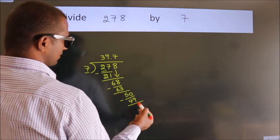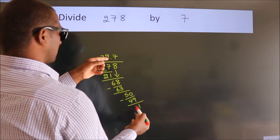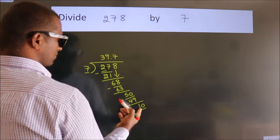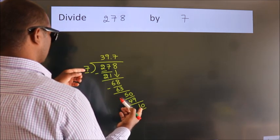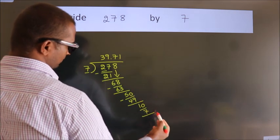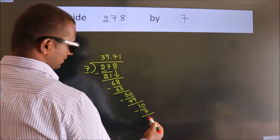After this, we already have the decimal, so directly take 0. So 10. A number close to 10 in the 7 table is 7 ones, 7. Now we subtract. We get 3.